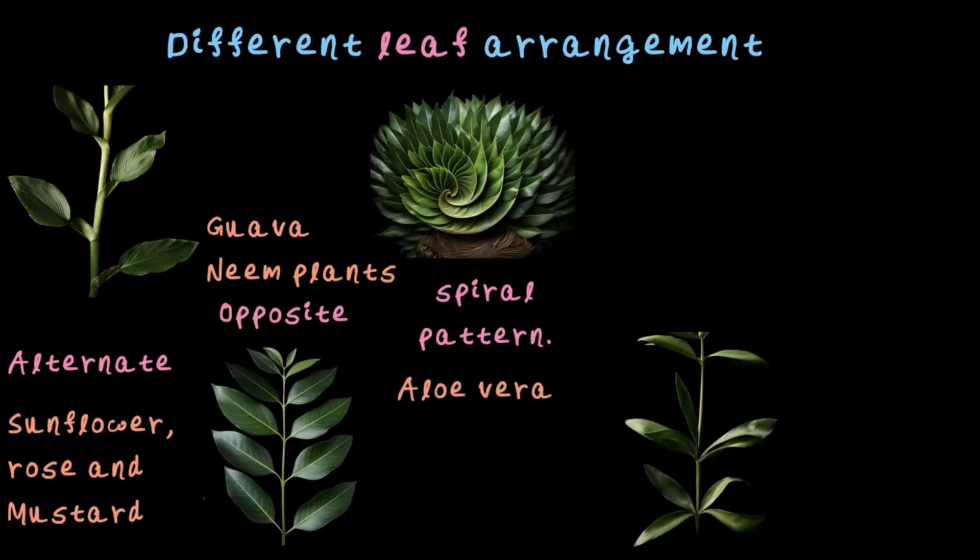Moving on to the next type, we have this type looking like the blades of a helicopter. You can see that the leaves are arranged in circular groups. This type of arrangement is called whorl arrangement or circular group arrangement. Wild lily is a very good example of this type of arrangement.